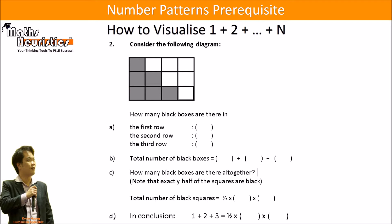Then let me take it one step further. This is now a 3 by 4 rectangle. And let's count the number of black boxes. So in the first row that's 1, second row that's 2, third row that's 3. Total number of black boxes will be 1 plus 2 plus 3.